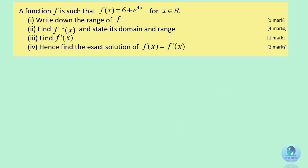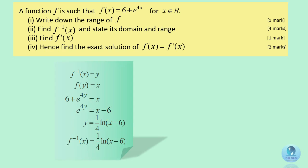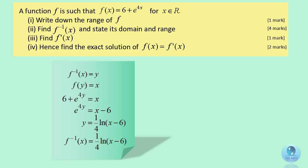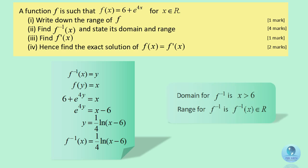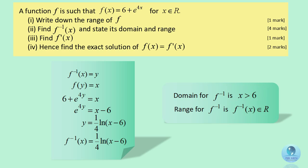This is how we get the inverse function of f, which is 1 over 4 times the natural log of (x minus 6). The domain for the inverse function is x greater than 6, and the range for the inverse function is the set of all real numbers.